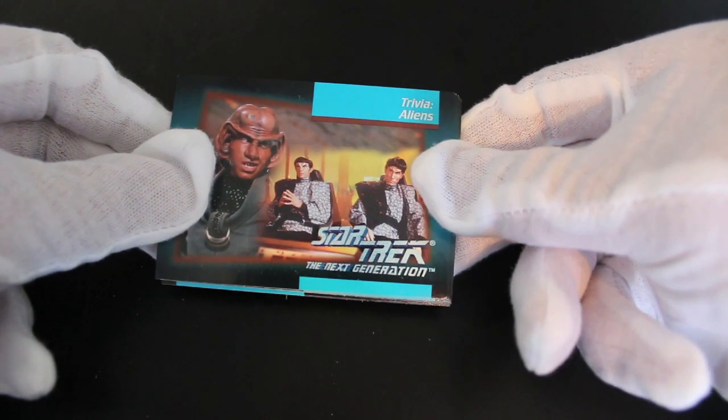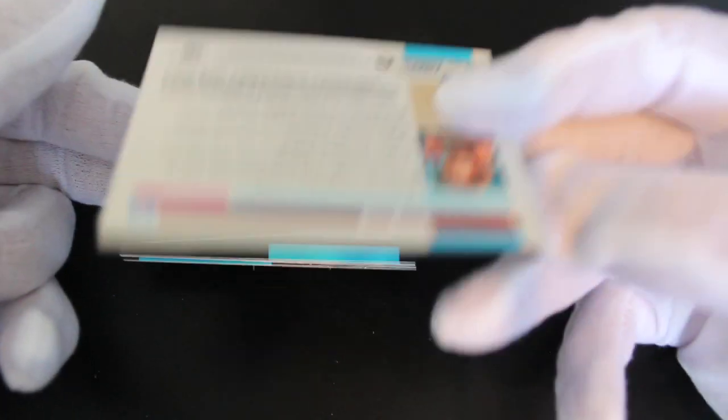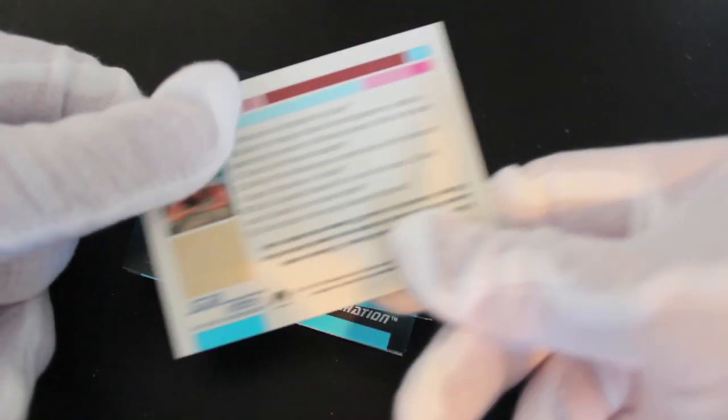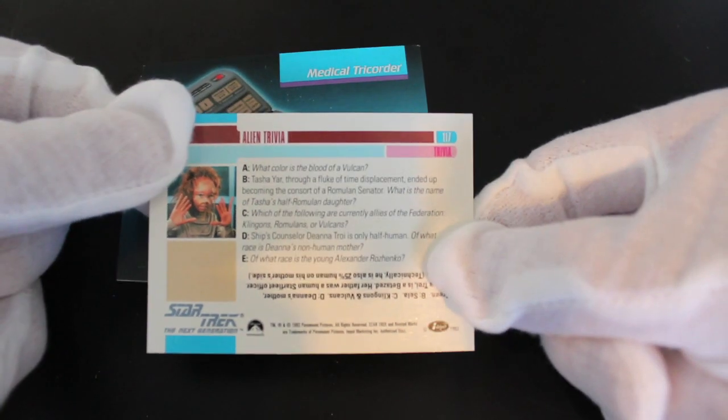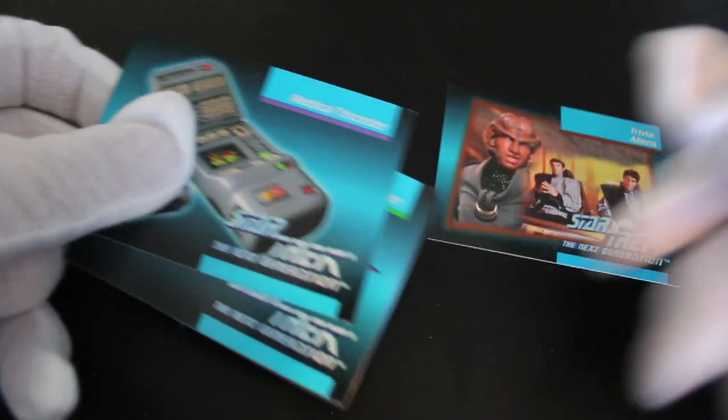So what have we got here? We've got Star Trek The Next Generation. Trivia. Aliens. Trivia. So you get a bit of trivia on the back. Ten cards. Yeah, yeah, yeah. Oh cool, oh yeah, a bit of trivia. You can have a little Star Trek quiz if you want.